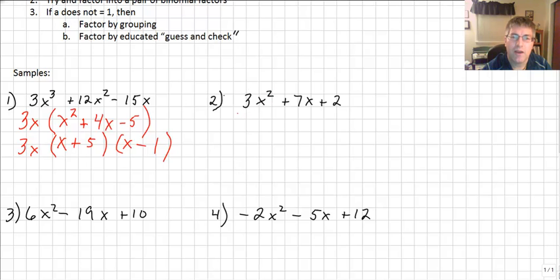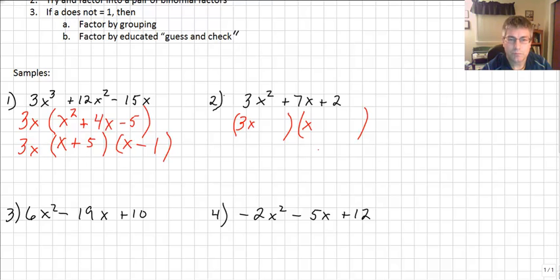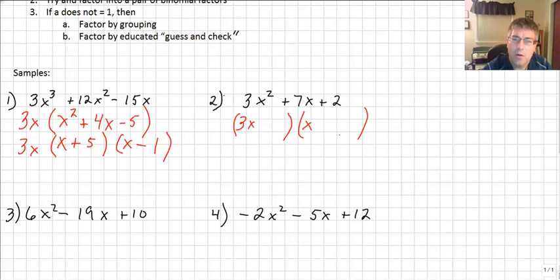If we want to factor 3x², we've got to divide that into two factors. Fortunately, 3 is prime, so our only real options are 3x and x. We need factors of 2, but now something interesting is going to happen. Because we have 3x here, when we multiply back, anything that falls into that fourth position is going to be tripled — multiplied by 3.